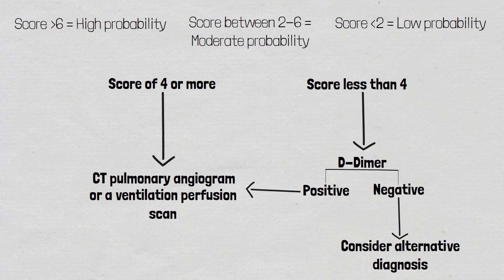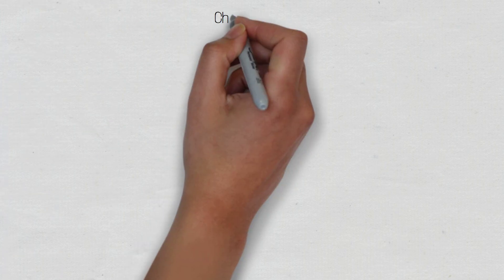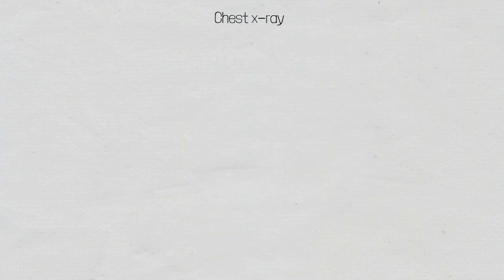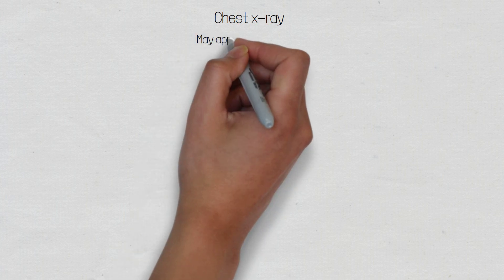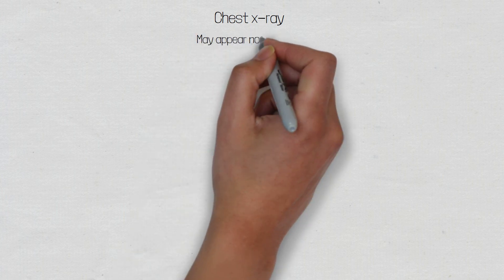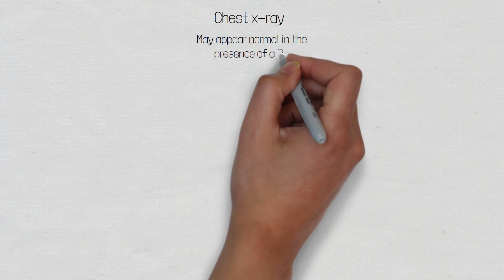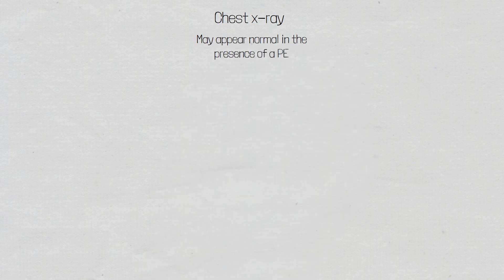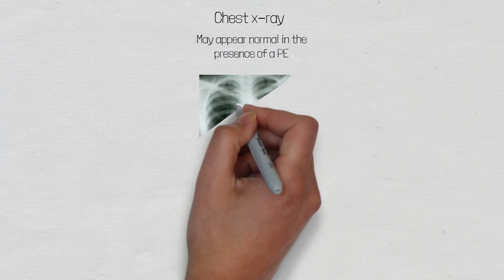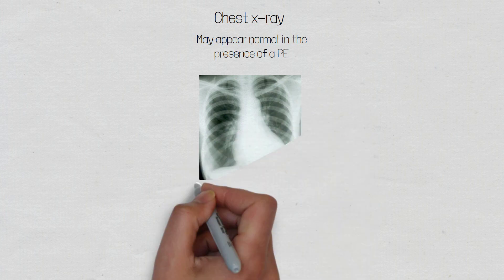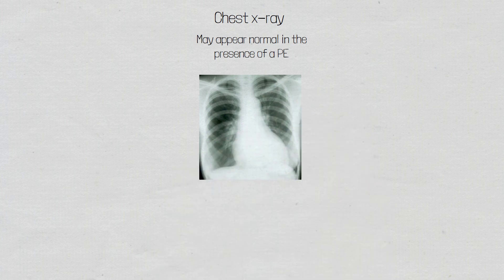Another investigation that can be conducted is a chest X-ray. A chest X-ray may be performed to rule out other pathologies and may even appear normal in a patient suffering with a pulmonary embolism. However, you may see enlargement of the pulmonary arteries or wedge-shaped opacities.